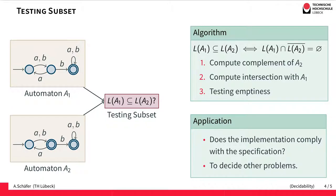And this can be easily decided using the things we already know by first computing the complement of A2, so accepting all the words that are not accepted by A2. Then compute the intersection of this language with the language defined by A1. And then check this language for emptiness.